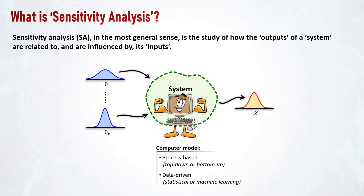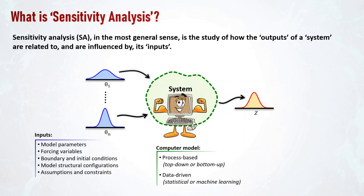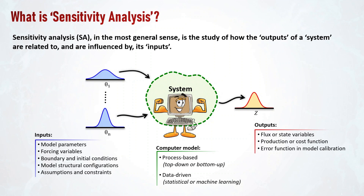The computer model can be process-based or purely data-driven — the former solving a set of differential equations on spatial-temporal domains through a top-down or bottom-up approach, and the latter directly mapping inputs to outputs using statistical or machine learning techniques. Inputs for a sensitivity analysis can be literally anything, including model parameters, forcing variables, boundary conditions, initial conditions, choices of model structural configurations, or other assumptions and constraints. Outputs can be any function of model responses, including flux or state variables that may vary over spatial-temporal domains, or objective functions such as a production or cost function in cost-benefit analysis, or an error function in model calibration.